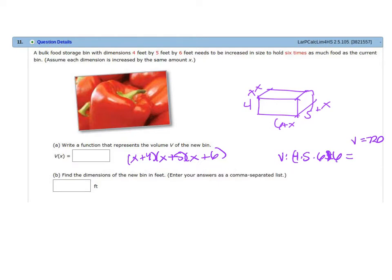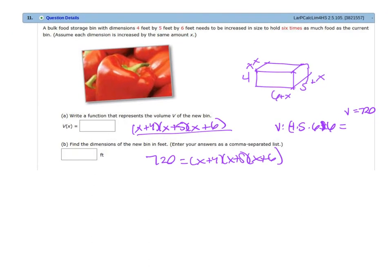So what we need to do is we already have this equation here. So we set it equal 720 equals x plus 4 times x plus 5 times x plus 6. And then you're going to have to multiply that all out, right, expand it.